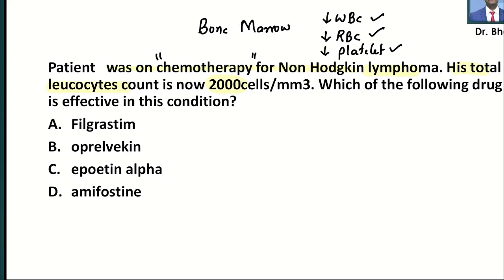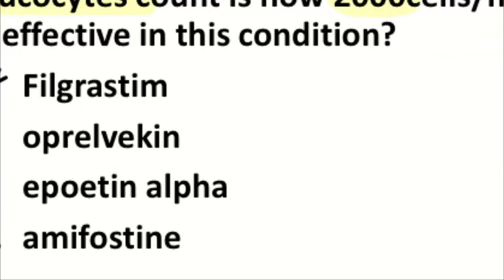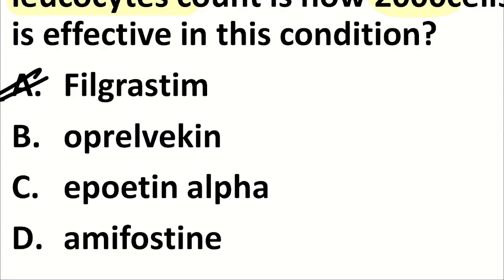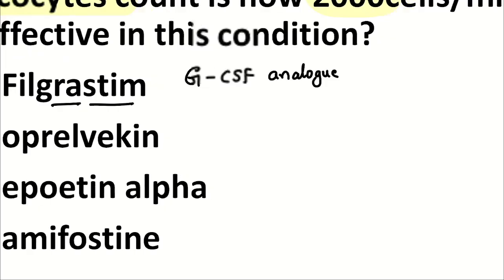The options are: Filgrastim, Oprelvekin, Erythropoietin alpha, and Amifostine. Try to answer this. If you are saying Filgrastim, then you are right. If you see the name, it ends with 'grastim', so it is a granulocyte stimulator — it is a G-CSF analog — and it can be used to overcome the decrease in WBC.